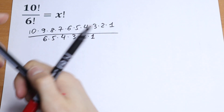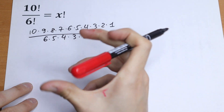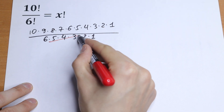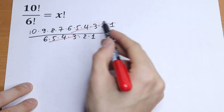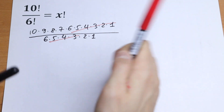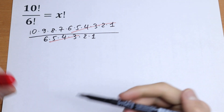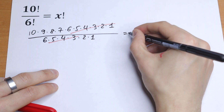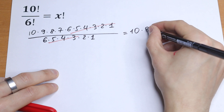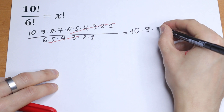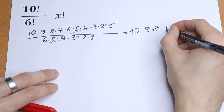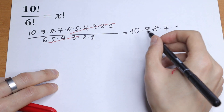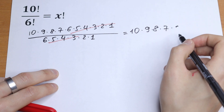And as you can see, this long product and this long product we can cancel — this is the same and this is the same. As a result we will have an interesting thing: 10 times 9 times 8 times 7.